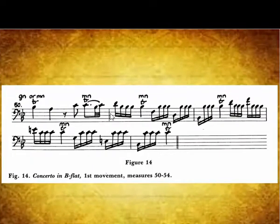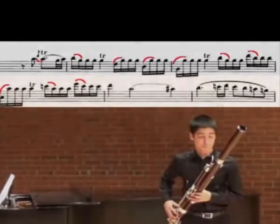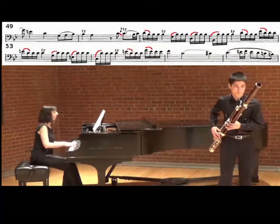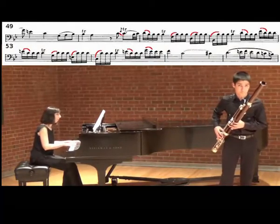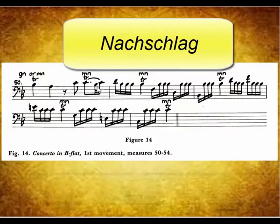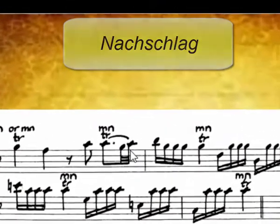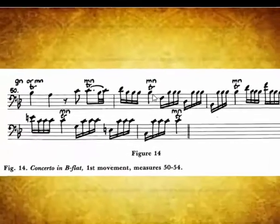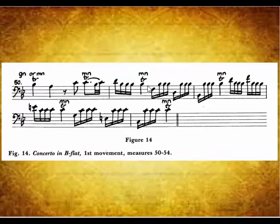The rest of the trills Newman recommends starting on the main note. I prefer, however, to add an appoggiatura to the C4 trill at the end of measure 50. Mozart has written a Nachschlag, or termination, to the trill at the end of measure 50. Terminations are not written for the rest of the trills. My preference is to start each of these trills on the main note and without a termination, which provides better clarity of the line: D4, Bb3, F3, D3, and Bb2.